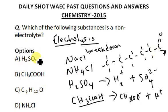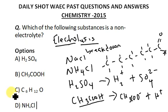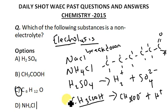So of all these options: H2SO4 is an electrolyte, CH3COOH is a weak electrolyte but still an electrolyte, NH4Cl is an electrolyte. However, option C is the odd one out — it is a non-electrolyte. It does not allow for chemical breakdown through the passage of electricity. So the answer, the non-electrolyte, is C6H12O.